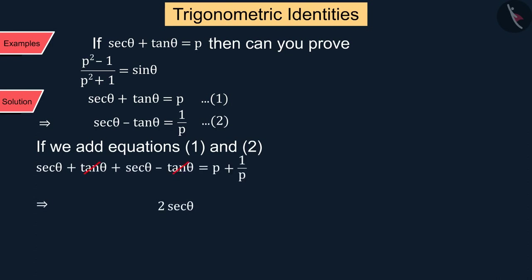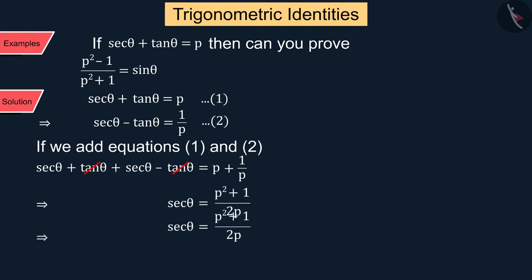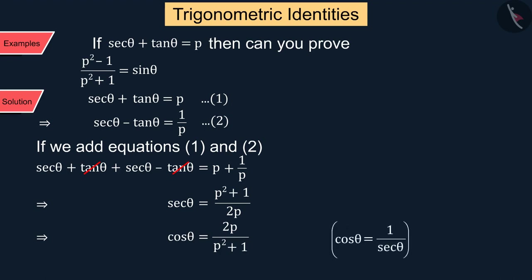Now if we add equations 1 and 2, we get sec θ = (p² + 1) / (2p). Since cos θ = 1 / sec θ, we can write cos θ = 2p / (p² + 1).